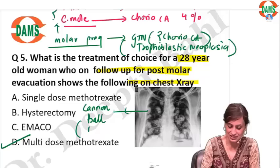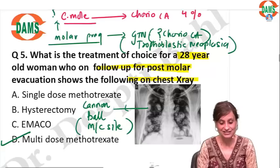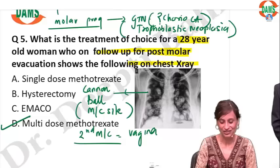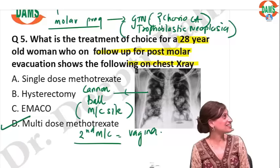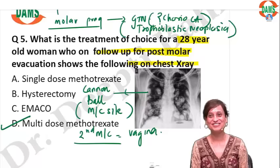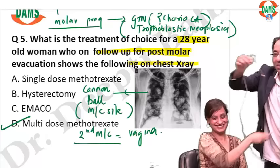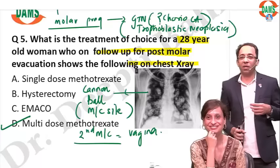The second most common site of metastasis is vagina. Dr. Samir is here for integration — on the X-ray you can see cannonball appearance, and after you see that you correlate clinically.